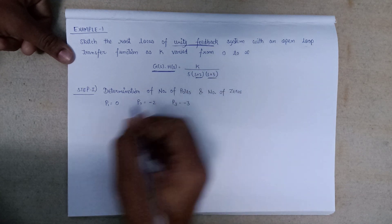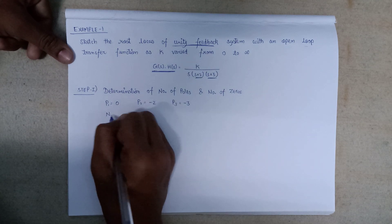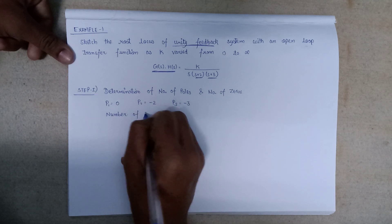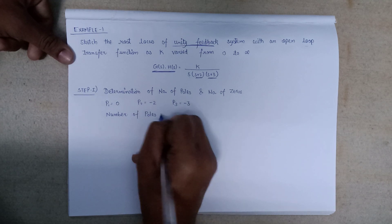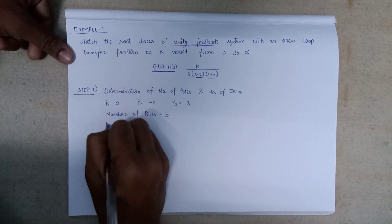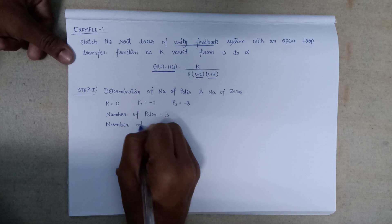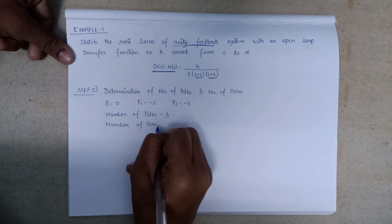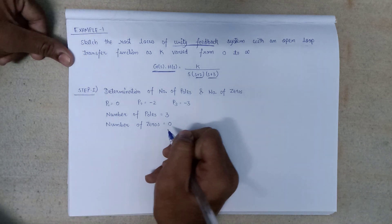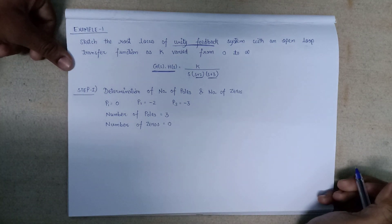Since no zeros are present, the number of poles equals 3 and the number of zeros equals 0. Step 1 is now completed.